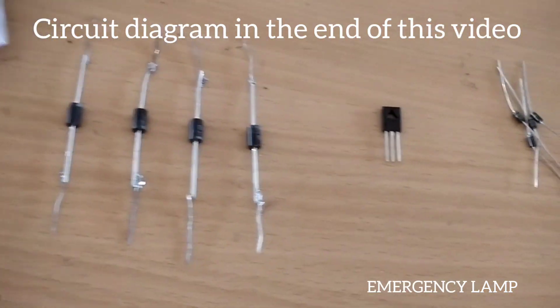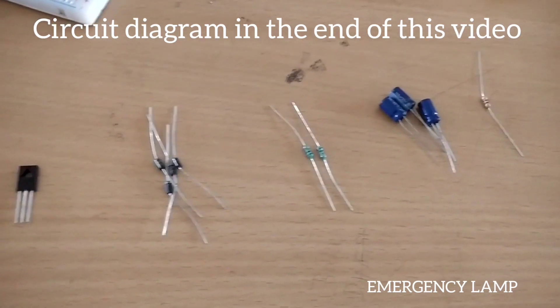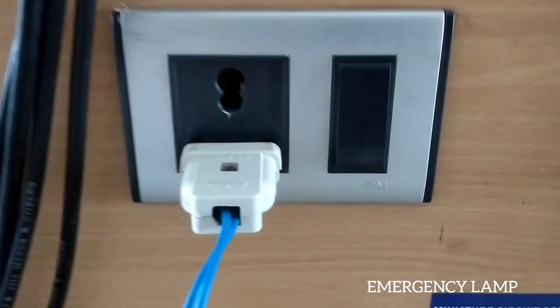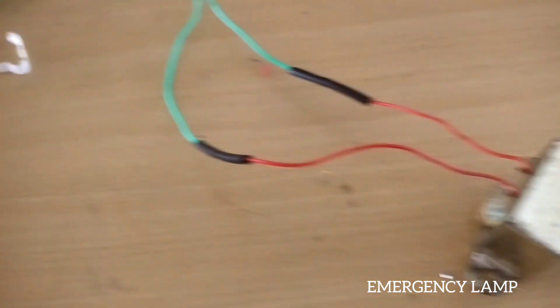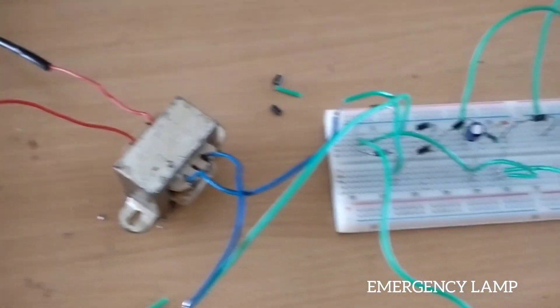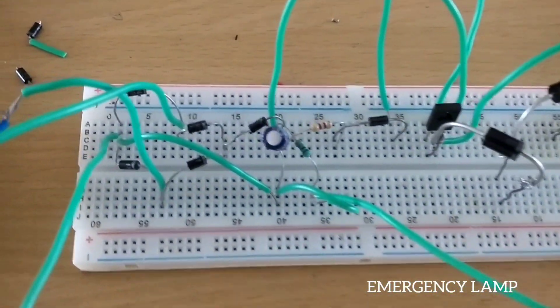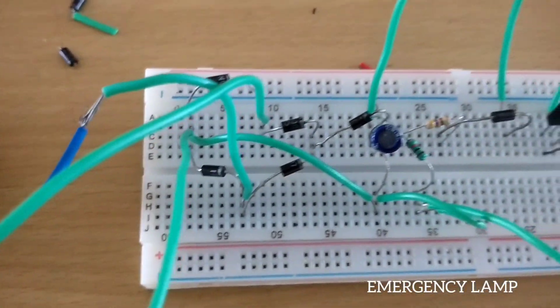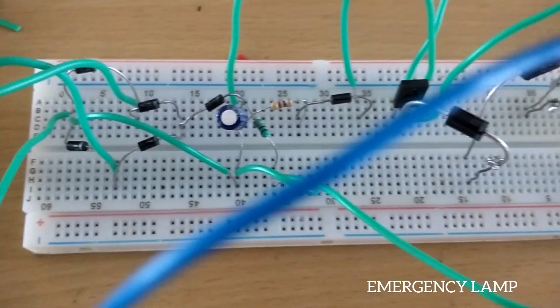Next you can see the circuit diagram. Now you can see it is in OFF condition. The transformer and all the components, according to the circuit diagram, are fixed in the breadboard. Be careful to fix in the breadboard, you can see.